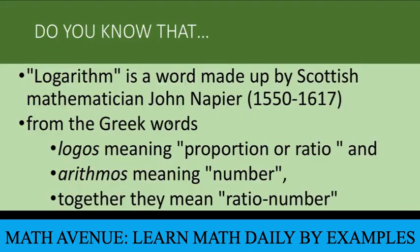Do you know that the word logarithm was coined by Scottish mathematician John Napier? Logarithm came from two Greek words: 'logos,' meaning proportion or ratio, and 'arithmos,' meaning number. Together they mean 'ratio number.' But for our understanding, it's easier to remember logarithm as exponent — logarithm means exponent.